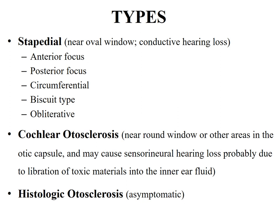Types: there are three types — stapedial, cochlear, and histological. Stapedial otosclerosis, causing stapes fixation and conductive deafness, is the most common variety. The lesion starts just in front of the oval window at the fistula ante fenestram — the site of the anterior focus. The lesion may also start behind the oval window, which is the posterior focus, around the margins of the stapes footplate, which is circumferential in the footplate but with the annular ligament being free.